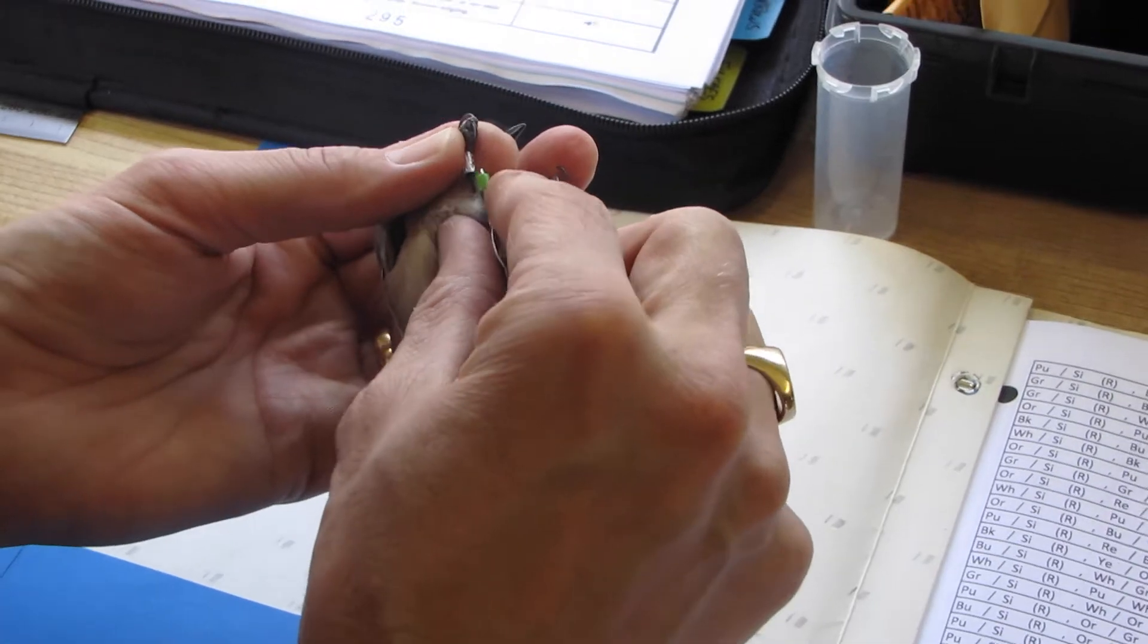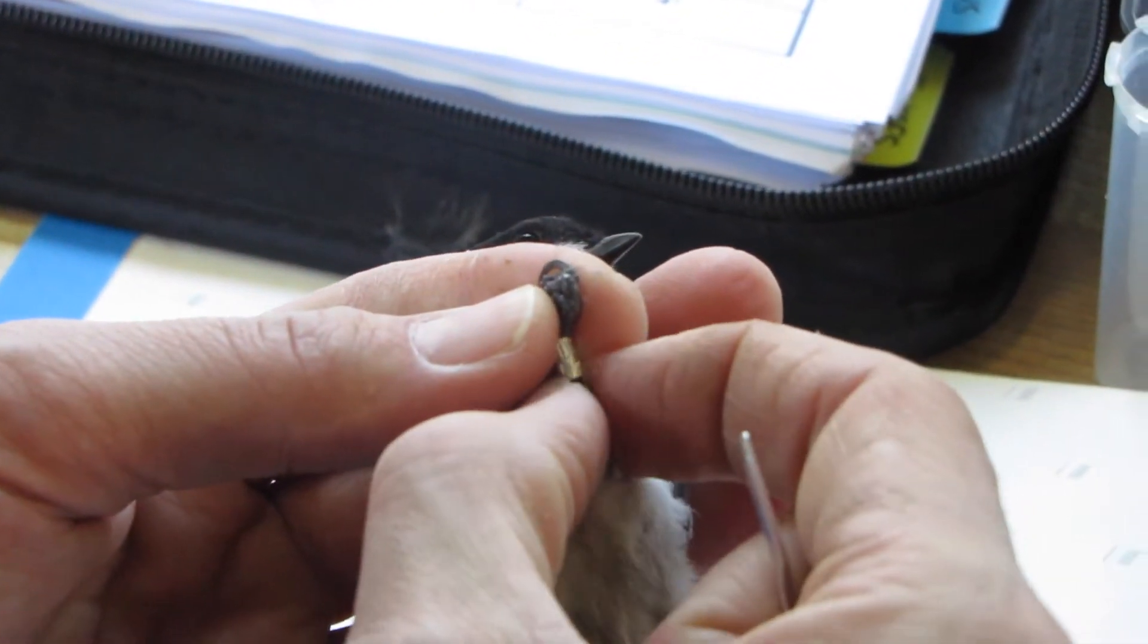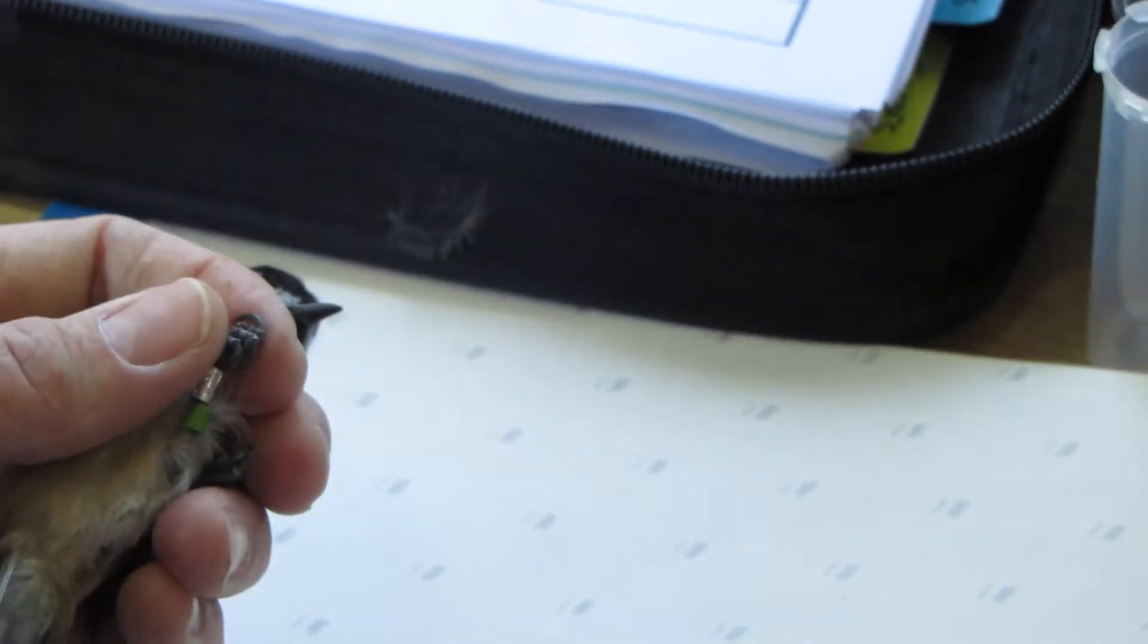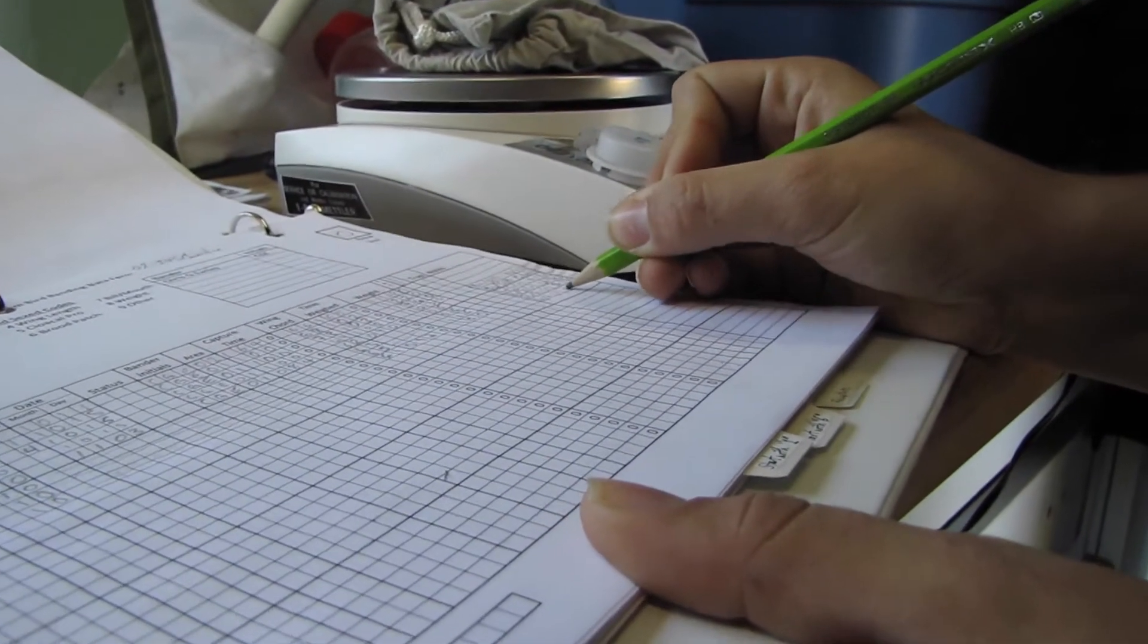And we slide it over the leg. And then slide it off. And let's make sure it shuts. So green over silver. And then green over blue. Put the blue one on first.